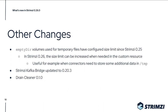There are also some other smaller changes. In Strimzi 0.25 we added a size limit to the empty dir volumes used for temporary files, but in some situations — mainly with Kafka Connect when a connector needs to store data in the /tmp directory — the default size was not sufficient. In Strimzi 0.26 you can now increase the size limit when needed, giving you more flexibility.